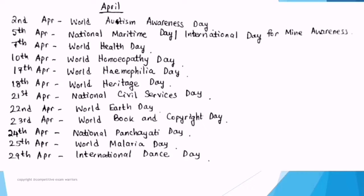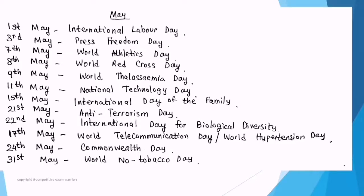April important dates: 2nd April — World Autism Awareness Day. 5th April — National Maritime Day and International Day for Mine Awareness. 7th April — World Health Day (share the theme in the comments). 10th April — World Homeopathy Day. 17th April — World Haemophilia Day. 18th April — World Heritage Day. 21st April — National Civil Services Day. 22nd April — World Earth Day. 23rd April — World Book and Copyright Day. 24th April — National Panchayati Raj Day. 25th April — World Malaria Day. 29th April — International Dance Day.